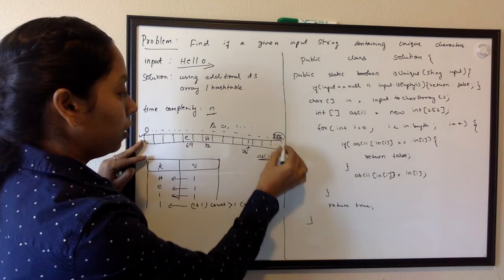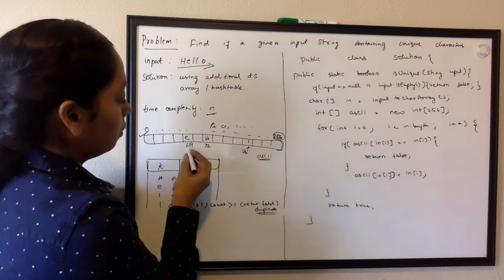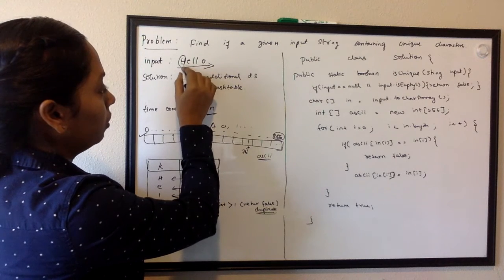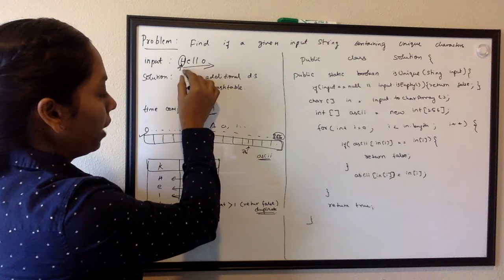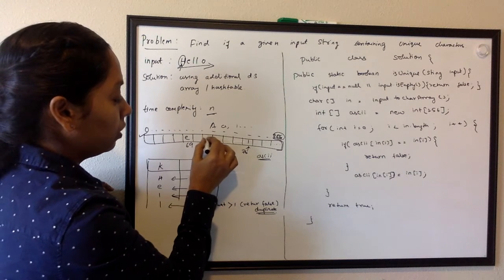As we find that element, we're going to find what is the decimal value. So if it is H, 72 is the decimal value of H, and then input into the 72nd position.